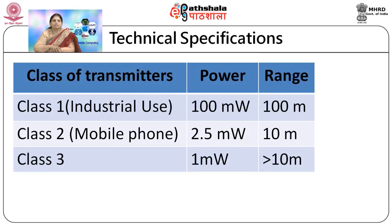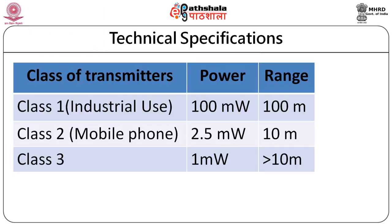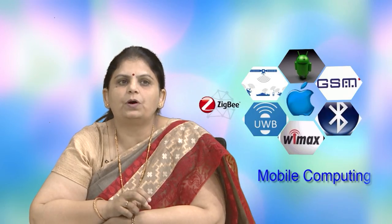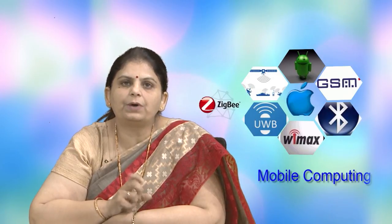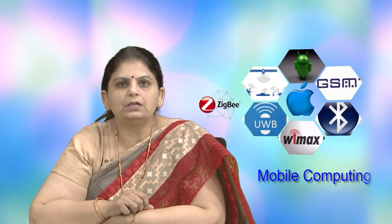The power and range supported by Bluetooth depend on the transmitter class. There are three classes: Class 1 is used for industrial use with 100 mW power and 100 meter range; Class 2 is for mobile phones with 2.5 mW and 10 meter range; Class 3 is for normal use with 1 mW and greater than 10 meters range. Class 3 transmitters are used in wearable devices forming body area networks, where less range is needed and low power consumption is important to avoid harming the human body.